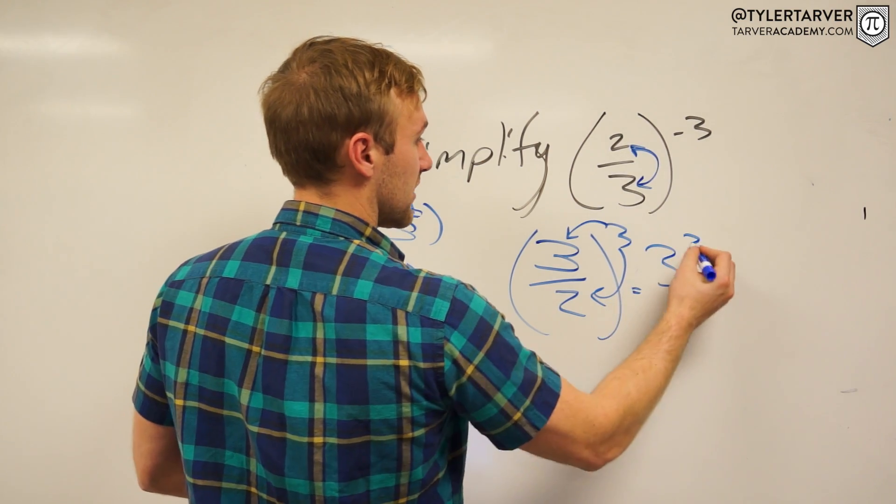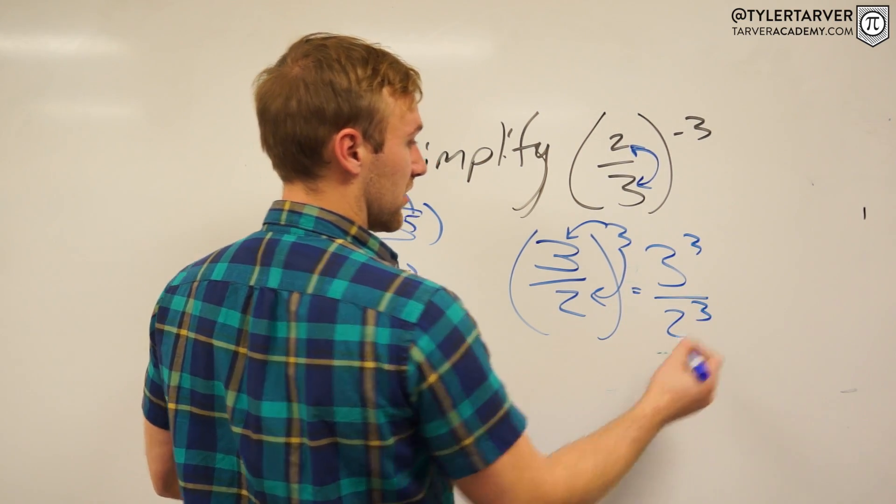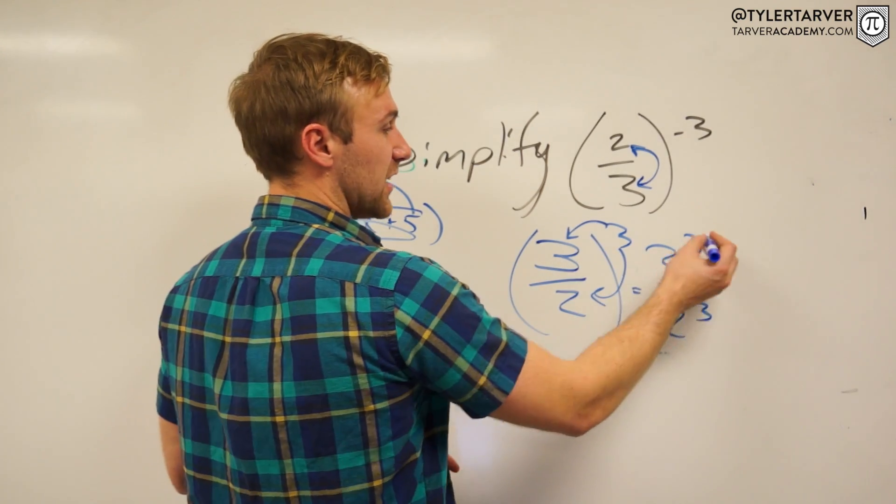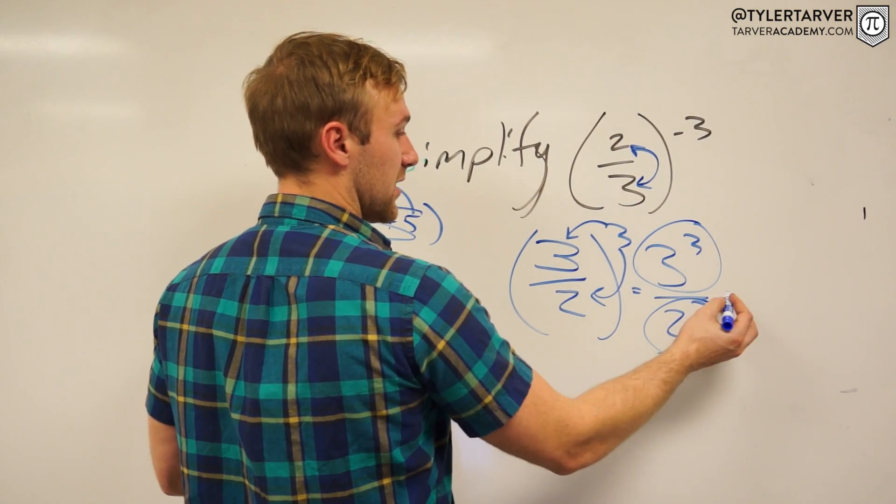So you've got 3 to the third, and then 2 to the third, which is cubed. So you got 3 cubed and 2 cubed. Then I just do the top part, do the bottom part, and see what happens.